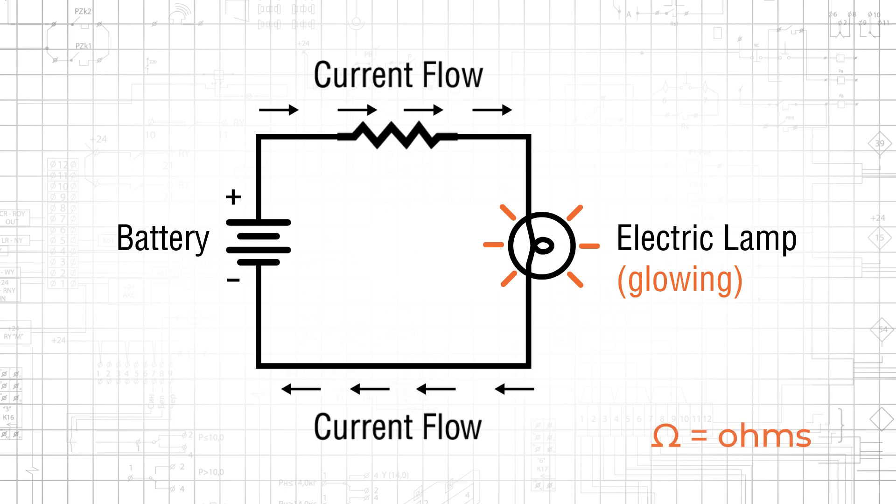Resistance is denoted in ohms and has the symbol of the capital Greek Omega, and this value allows us to quantify opposition to electric current.